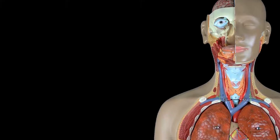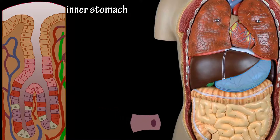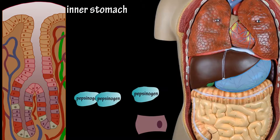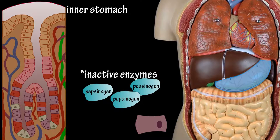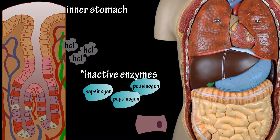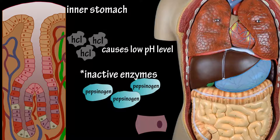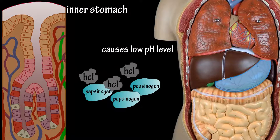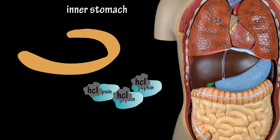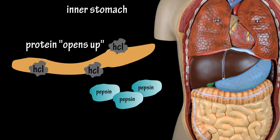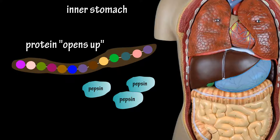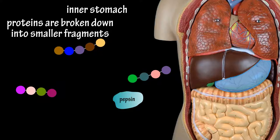There are two main places that protein digestion takes place: in the stomach and in the small intestine. Once the protein molecules are swallowed and enter the stomach, chief cells in the stomach release the enzyme pepsinogen. Pepsinogen is an inactive enzyme because if it were active in the cells, it would destroy proteins located inside the cells. Hydrochloric acid released inside the stomach causes a low pH level, and this activates pepsinogen to pepsin. It also denatures the proteins — changing their shapes and causing them to unfold — and pepsin breaks down the proteins into smaller fragments.